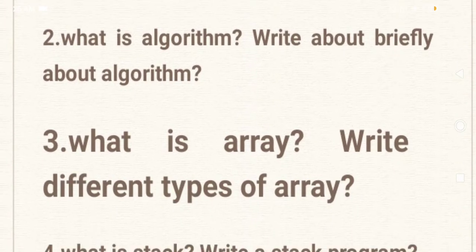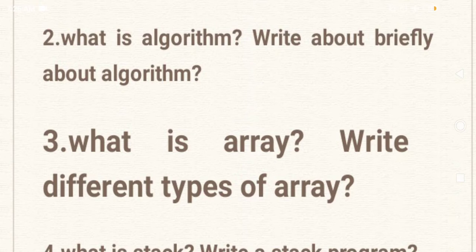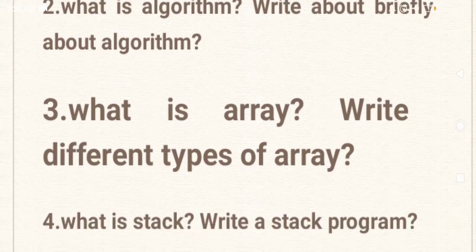Third question: What is an array? Write about the different types of array. An array is a collection of homogeneous data items or variables. There are different types: one-dimensional, two-dimensional, and multi-dimensional types.